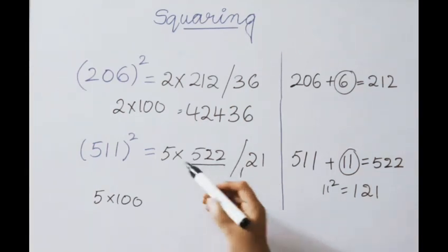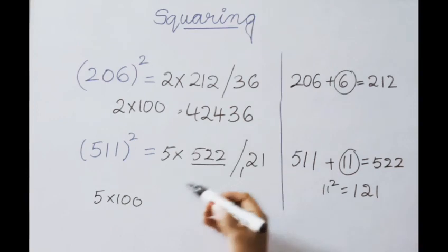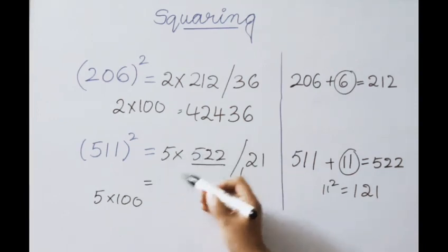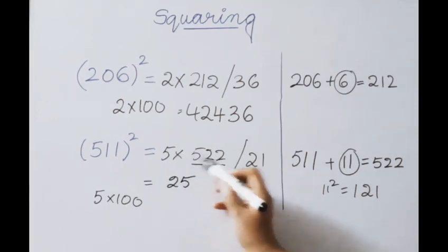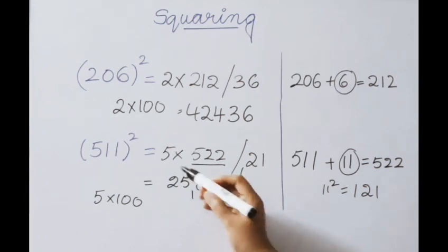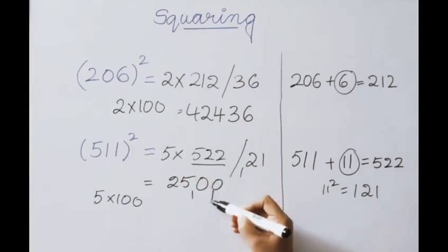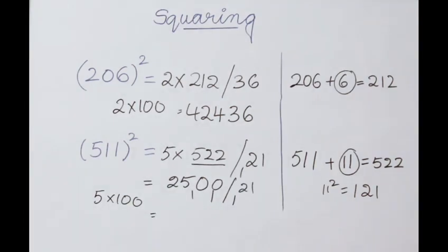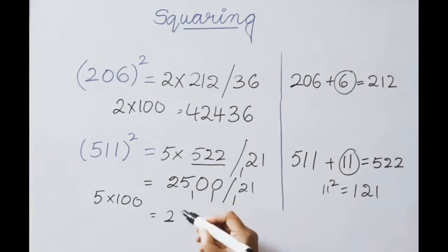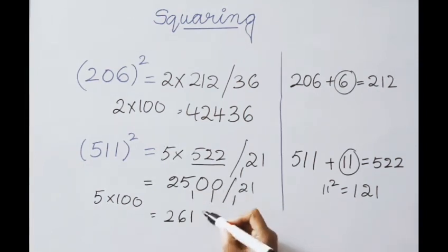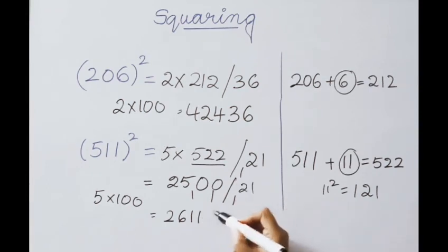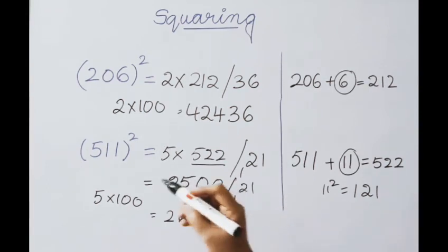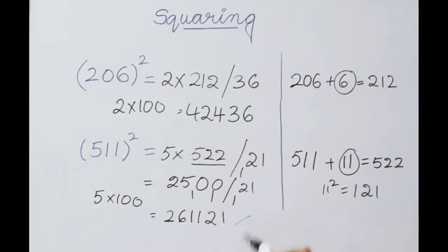Now multiply 522 by 5: 5 fives are 25; 5 twos are 10, write 0 carry 1; 5 twos are 10, write 0 carry 1; 5 twos are 10, write 0 carry 1. Second part answer is 121. After adding carries: 5 plus 1 is 6; 0 plus 1 is 1; 0 plus 1 is 1; second part 21. So 511 squared answer is 261121.